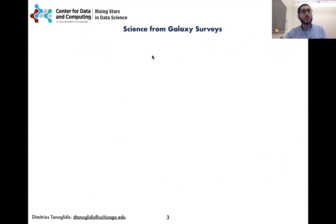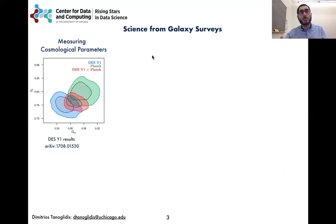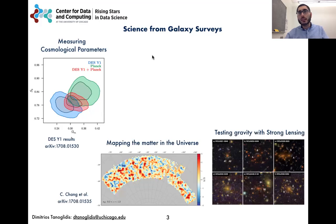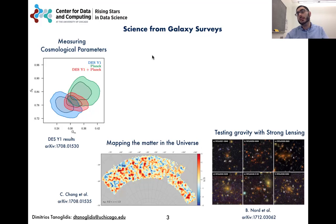Using this data, valuable scientific results can be extracted from measuring the cosmological parameters, mapping the distribution of dark matter in the universe, and using the lensing of galaxy images from the presence of foreground matter to test gravity theories. In all these cases, traditional analysis methods are being supplemented more and more often with machine deep learning.